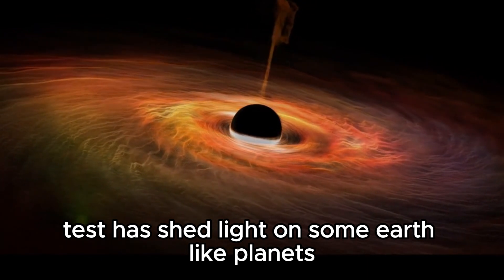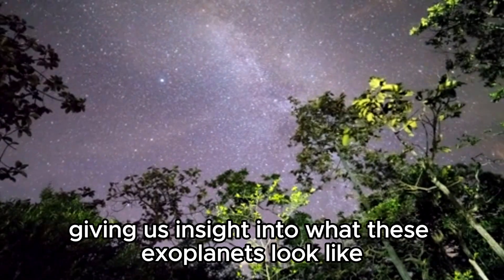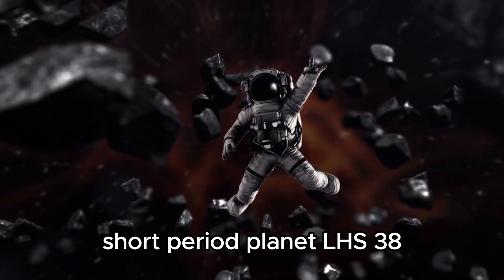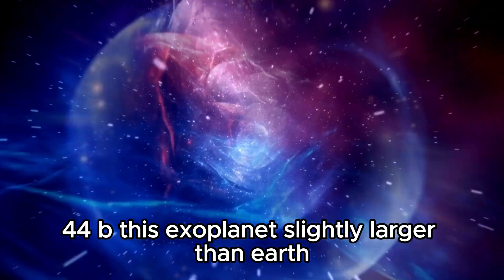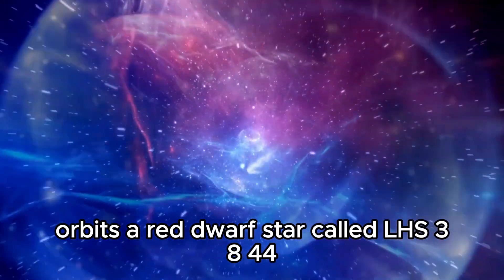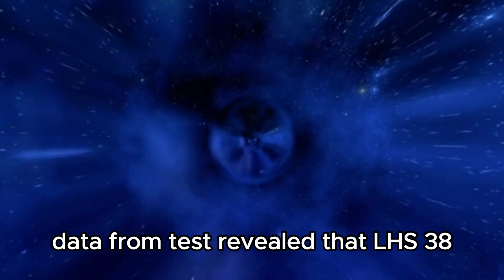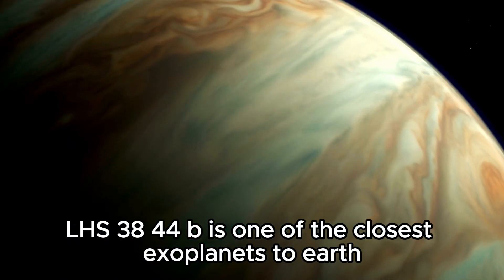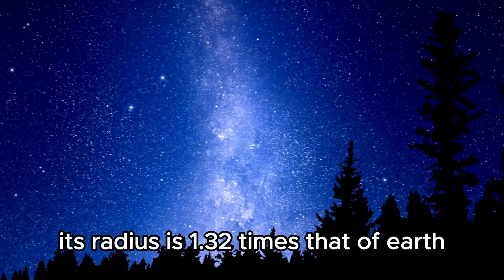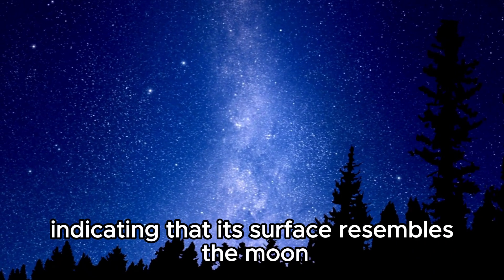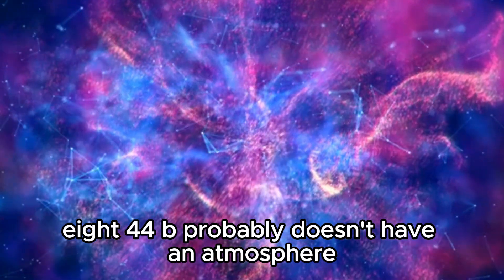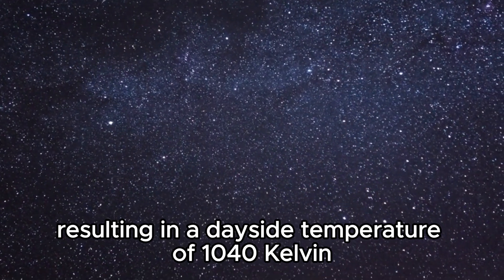TESS has shed light on some Earth-like planets outside our solar system, giving us insight into what these exoplanets look like and what to expect if we ever visit them. On September 20, 2018, the TESS telescope announced the existence of an ultra-short-period planet, LHS 3844b. This exoplanet, slightly larger than Earth, orbits a red dwarf star called LHS 3844. Data from TESS revealed that LHS 3844b has an orbital period of 11 hours, making it one of the planets with the shortest known orbit periods. LHS 3844b is one of the closest exoplanets to Earth, at a distance of 149 light-years. Its radius is 1.32 times that of Earth, and it has a low albedo, indicating that its surface resembles the Moon or Mercury. Observations suggest that LHS 3844b probably doesn't have an atmosphere, as almost no heat is transferred to its night side, resulting in a day-side temperature of 1040 Kelvin.